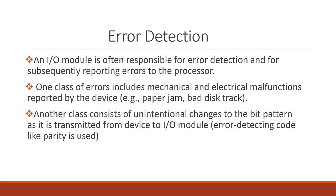So to summarize the IO module functions: control and timing, processor communication, device communication, and data buffering. These are the main categories of IO module functions.